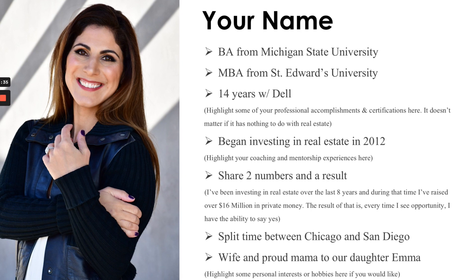What are your two numbers and a result? Just do you and be you. Maybe it's: 'I've been investing in real estate over the last year and completed $100,000 in transactions,' or two transactions, or one wholesale and one rehab. If you've done nothing, say: 'Our goal is to complete three transactions over the next 12 months.' Share two numbers and a result. Your result can be the same as mine — every time I see opportunity, I have the ability to say yes. Once you know how to raise private money, that's what's going to happen.